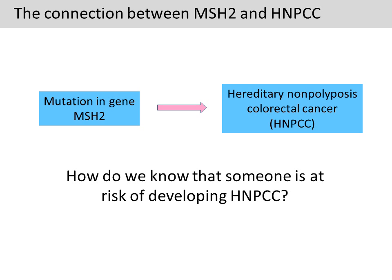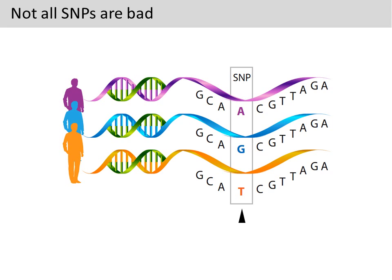Is it possible to determine an individual's risk of developing HNPCC based on MSH2 sequence? With the advent of biotechnology, it is possible to sequence a gene from an individual very quickly. The problem is that we all carry slightly different versions of the gene. As shown in this figure, the base at this particular position is variable among the three individuals. This is called a single nucleotide polymorphism, or SNP.